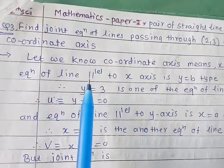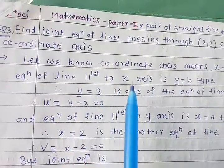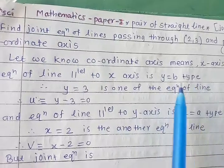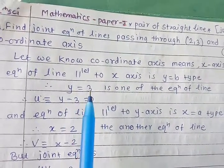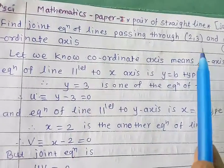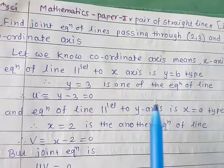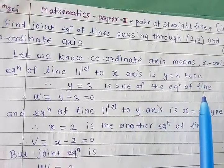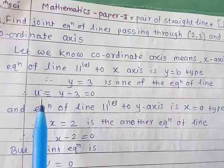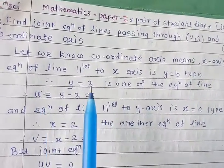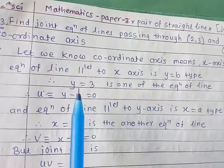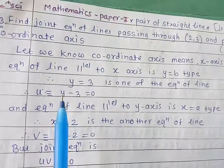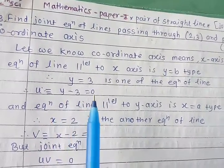The equation of the line parallel to the x-axis is of the form y = b. Here b equals 3, so y = 3 is one of the equations of the line. Taking 3 to the LHS, we get u: y minus 3 equals 0.